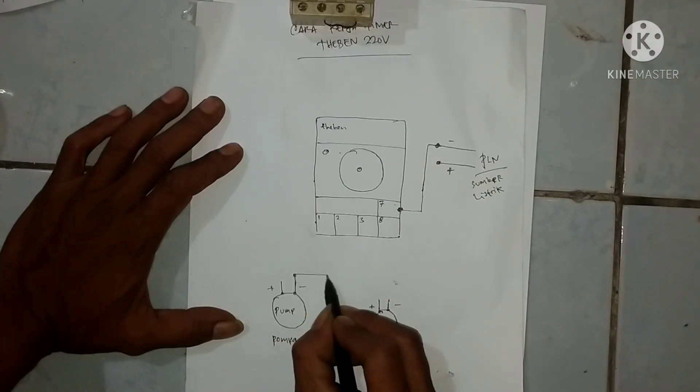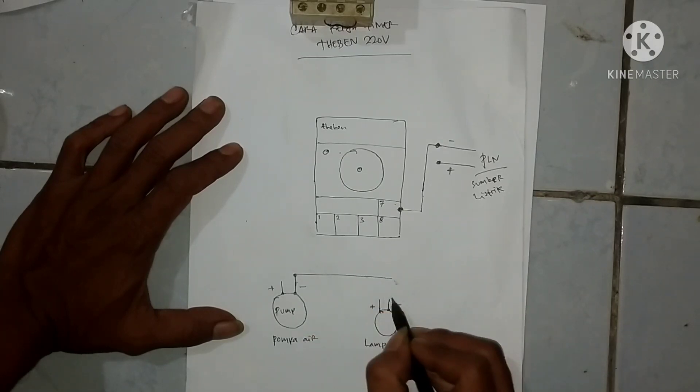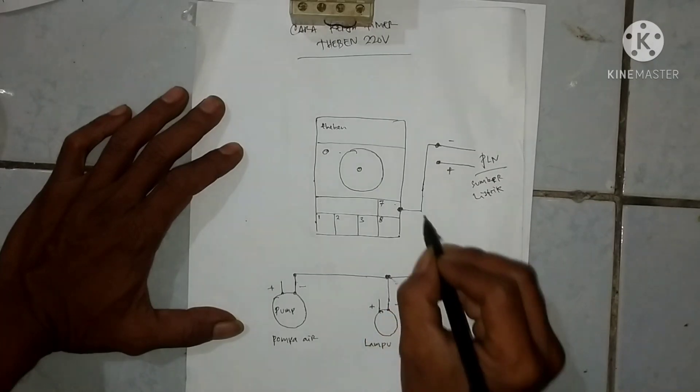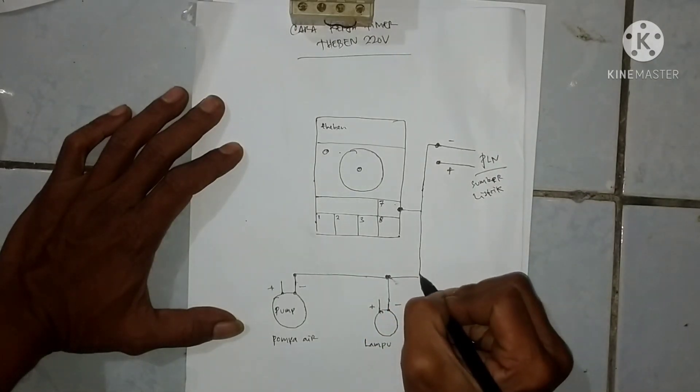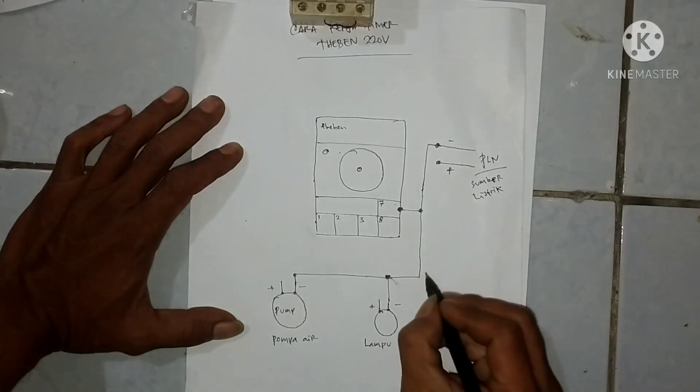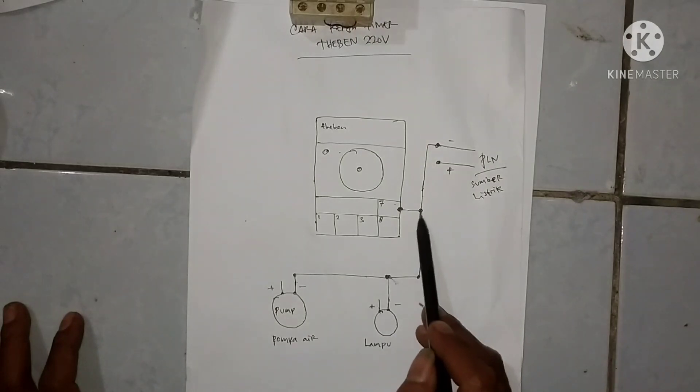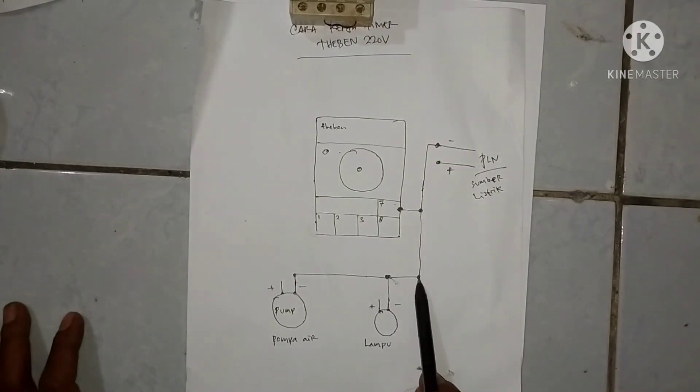Kemudian di bebannya antara pompa dan lampu kita jumper nolnya. Jumper nolnya kita jumper lagi masukkan lagi ke netral sumber atau ke timer juga bisa di-jumper di dalam timer ya di angka 7.